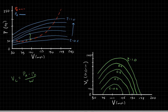For a throttle setting of 0.7 at an airspeed of 100, the rate of climb would be proportional to the difference between the power available and the power required. In this case, the power available is higher than the power required, so we would indeed be climbing.